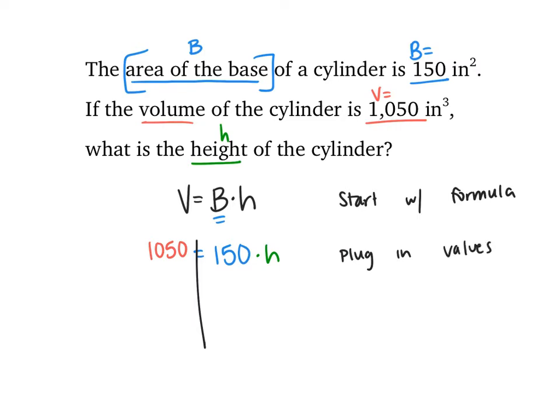From there, the next thing you're going to do is take this as an equation and solve for h. Since those are being multiplied, I would divide both sides by 150. So 1,050 divided by 150 gets me a value of 7, which would be my height.